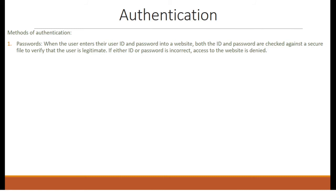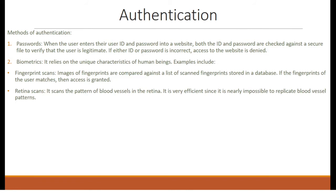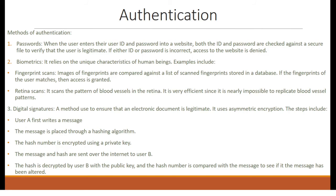Biometrics. It relies on the unique characteristics of human beings. Examples include fingerprint scans, where images of fingerprints are compared against a list of scanned fingerprints stored in a database — if the fingerprints match, access is granted. Retina scans: it scans the pattern of blood vessels in the retina. It is very efficient since it is nearly impossible to replicate blood vessel patterns. Digital signatures: a method used to ensure that an electronic document is legitimate. It uses asymmetric encryption. The steps include: User A writes a message, the message is placed through a hashing algorithm, the hash number is encrypted using a private key, the message and hash are sent over the internet to User B, the hash is decrypted by User B with the public key, and the hash number is compared with the message to see if the message has been altered.